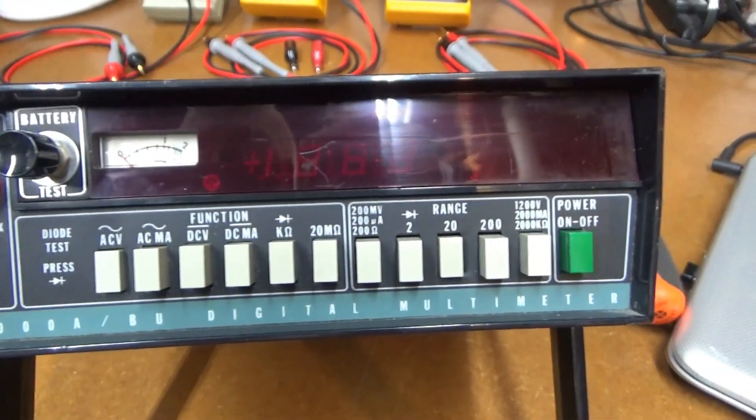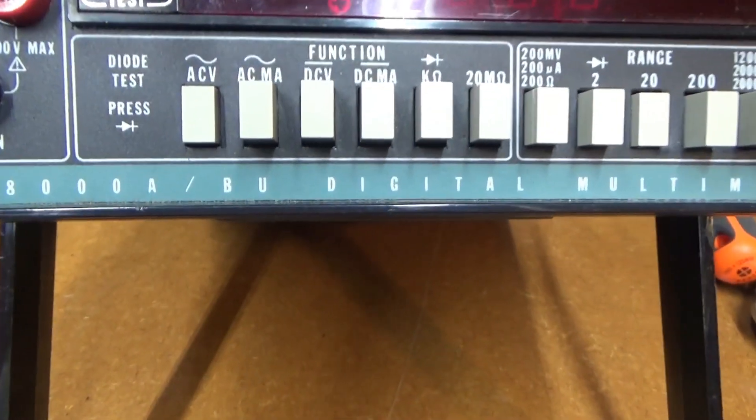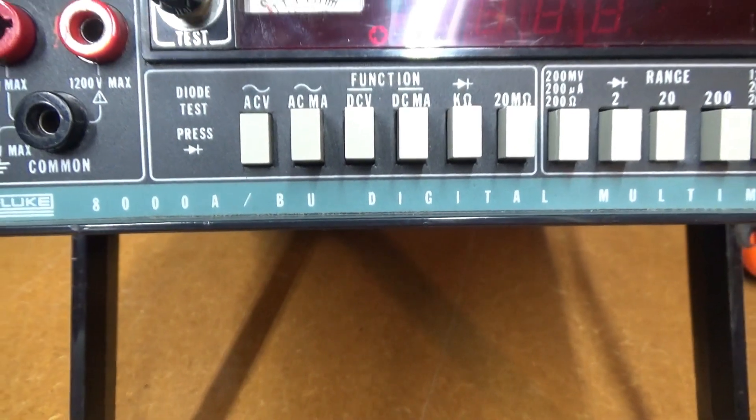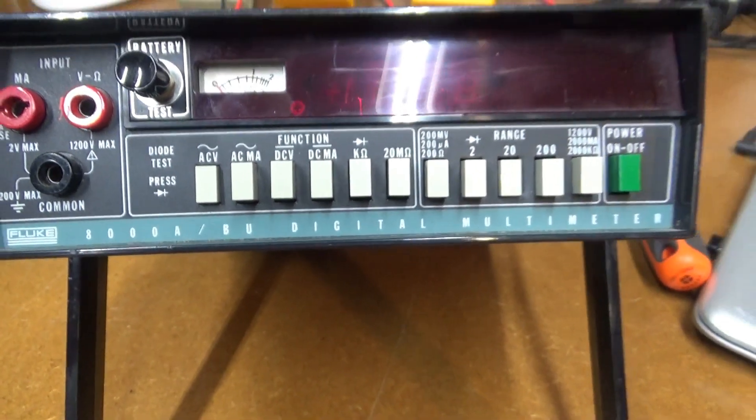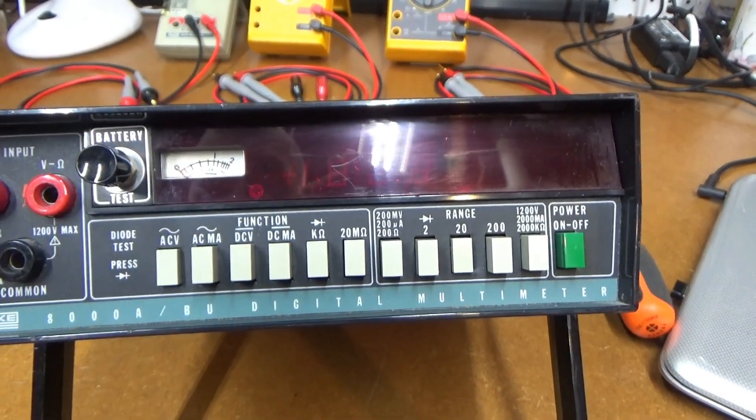Alright, I've got a new project Fluke meter here. This is my oldest one yet. This is the 8000A with a battery option. That's a little battery test thing here.